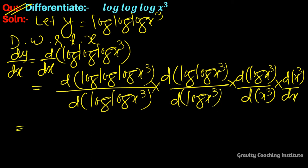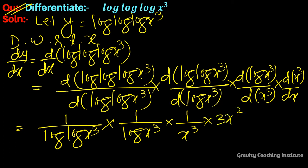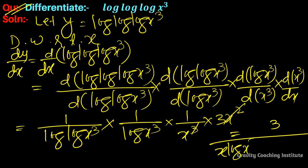The chain rule terms are: log(log(log(x³))), log(x³), and x³. The derivative of x³ is 3x². Combining everything, the final answer equals 3 divided by x·log(x³)·log(log(x³)).